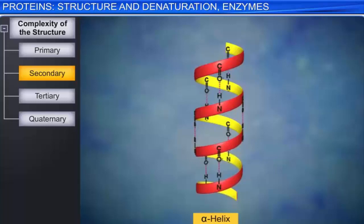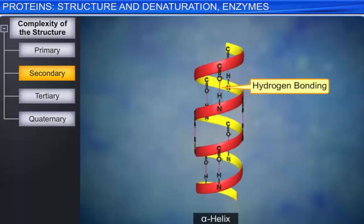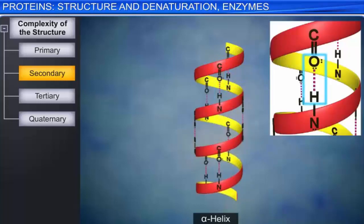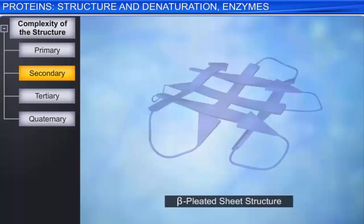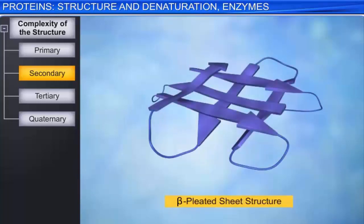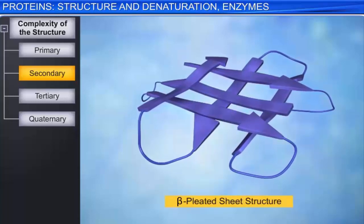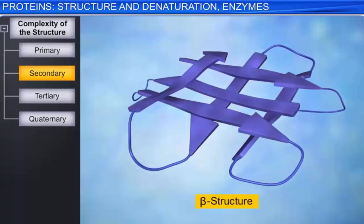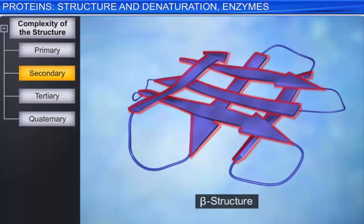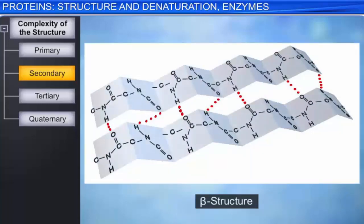The hydrogen bonds in an alpha helix occur between the oxygen atom of the carbonyl group of one amino acid residue and the hydrogen atom of the NH group of a different amino acid residue on the adjacent turn of the helix. Another common secondary structure in proteins is referred to as the beta pleated sheet structure. The beta pleated sheet is nowadays referred to as the beta structure. The contraction of the peptide chains results in a pleated sheet; the chains lie side by side and are held together by hydrogen bonds.